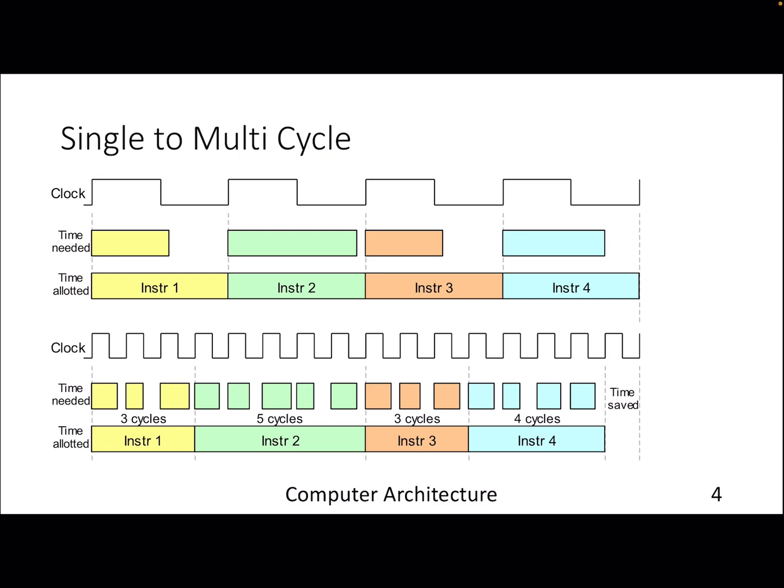Instead of assuming that one instruction will take one cycle the way we have seen, we can assume one instruction can take multiple cycles and it may not be a constant. Depending on ALU, loads, register, branch, jump, or whatever, the number of cycles may be different.